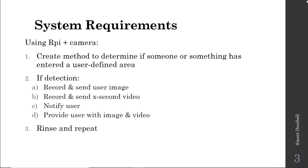We want to create a method to determine if someone has approached our house. In this lecture, we're going to use my house as the test setup. I want to know if someone or something has entered a user-defined area — for me, that's going to be my front porch. I'll show you how we define that area of interest. If the system makes a detection, we want to record two images.